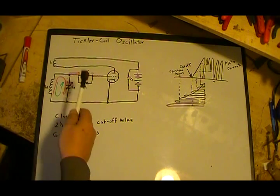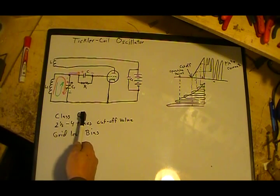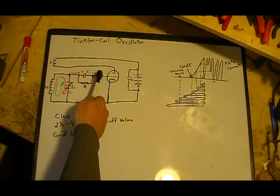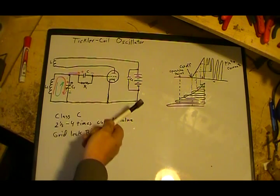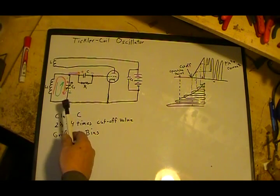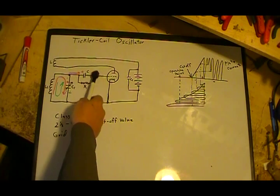Oscillators can't do that because the fixed bias has to be in class C operation. If you set it at that point, the thing never starts.